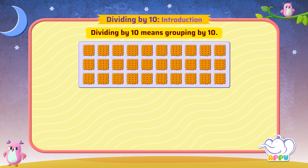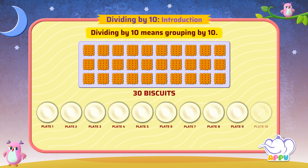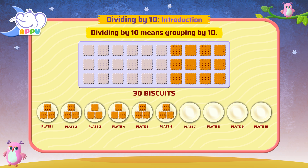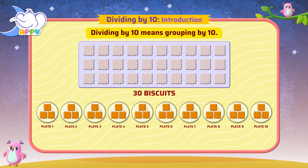Next, let's divide 30 biscuits in 10 plates. What do we get? We get 3 biscuits in 10 plates. So the answer is 3. We write it as 30 ÷ 10, which equals 3.